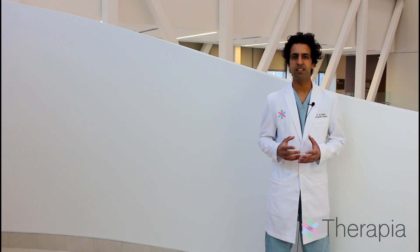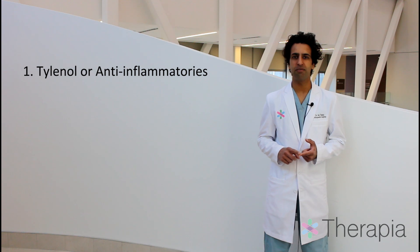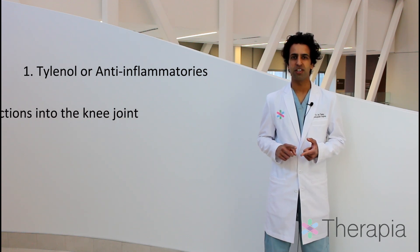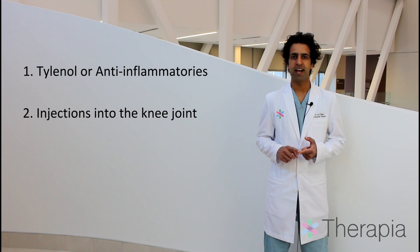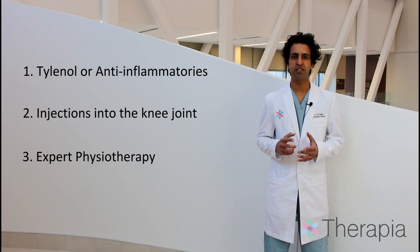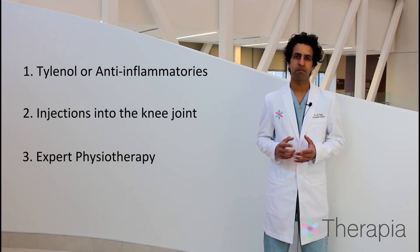There are plenty of treatment options that range from simple over-the-counter medications to reconstructive surgery. For most patients, initial treatment often consists of Tylenol or an anti-inflammatory medication, some sort of injection such as cortisone, hyaluronic acid, or platelet-rich plasma, physiotherapy in the form of strengthening the quadriceps musculature, core musculature, and modalities to decrease swelling, and some sort of surgery.